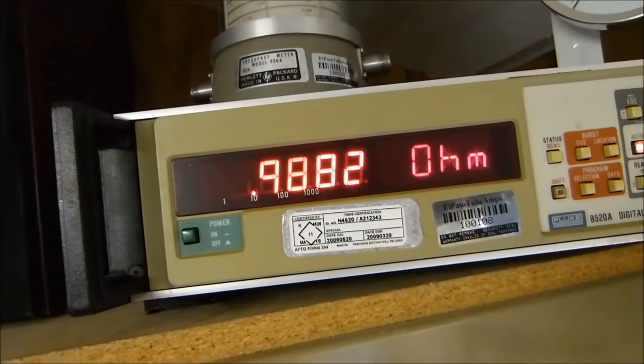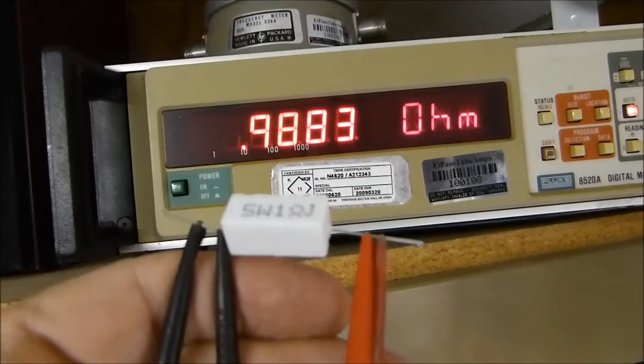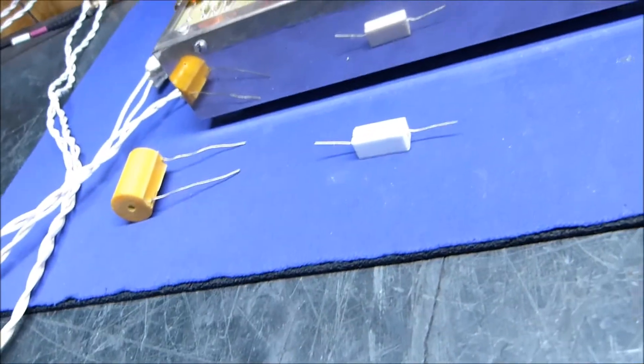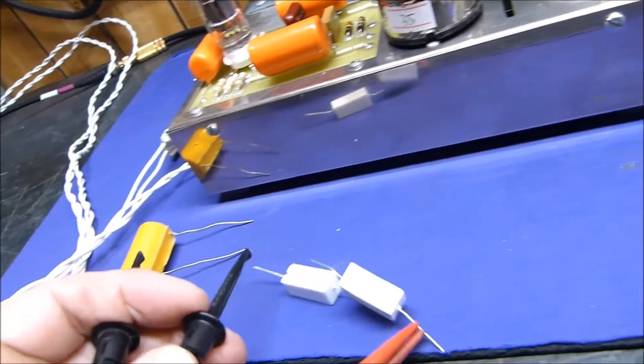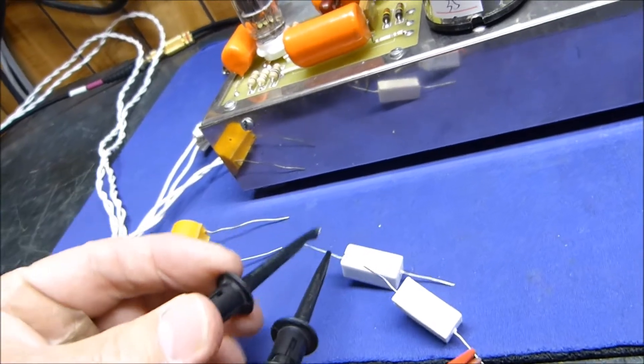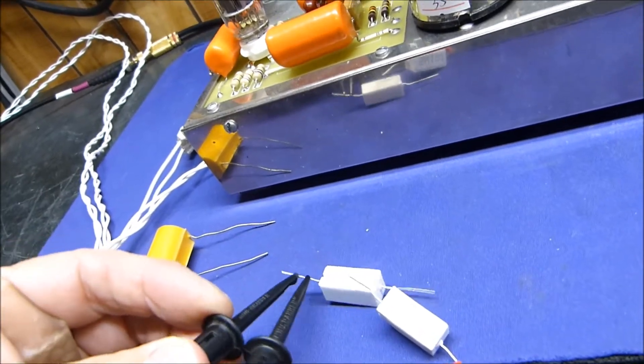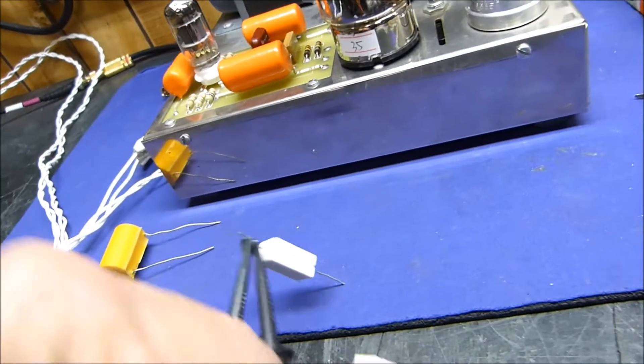This resistor is a one-ohm resistor and it measures 0.9882 ohms, and you know what, it's right. Let's measure another one. This may not seem significant, but if you're trying to match resistors and you're really picky like I am sometimes, you want this.